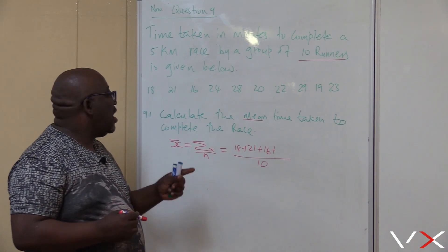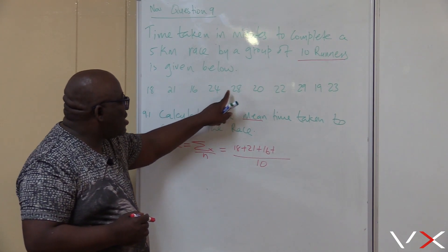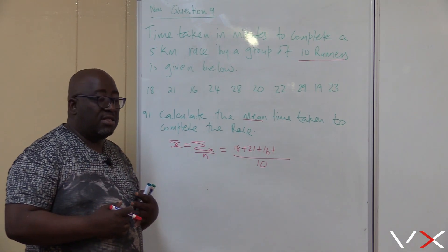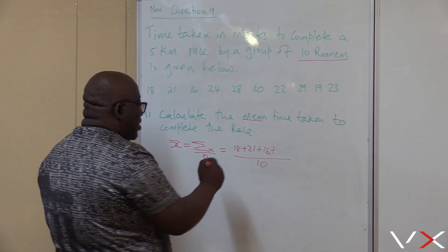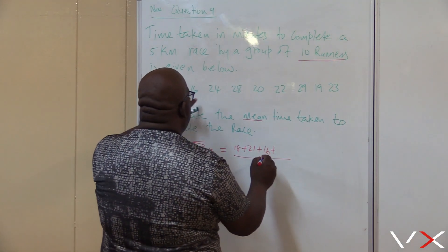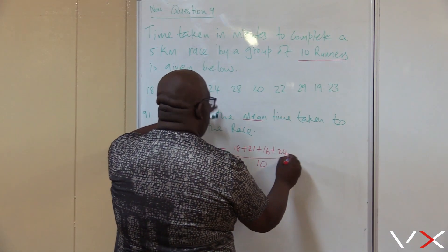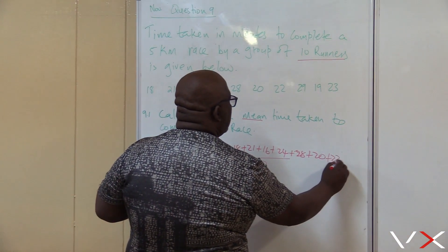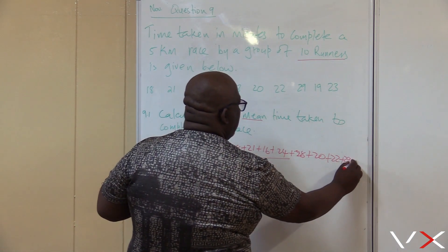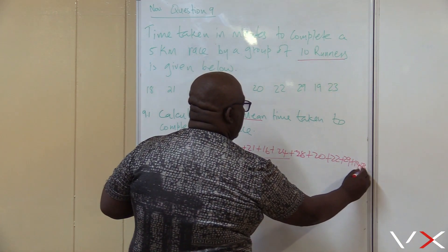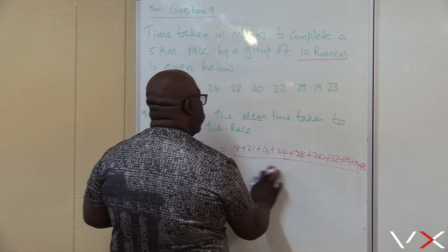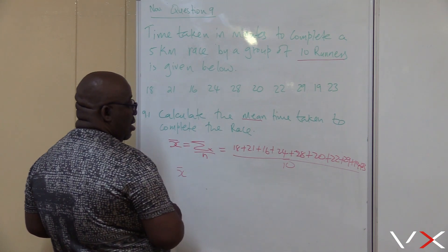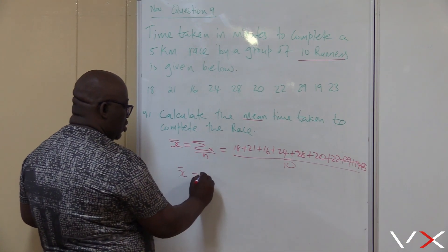You can use a calculator rather than doing it manually. Add all the values: 18, 21, 16, 24, 28, 20, 22, 29, 19, plus 23 — divide by 10 — and you'll find that your X bar equals 22 minutes.